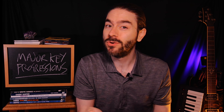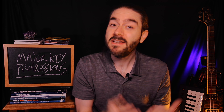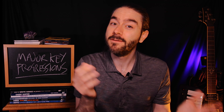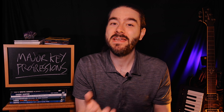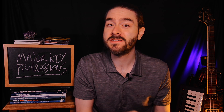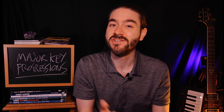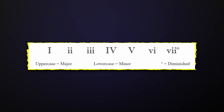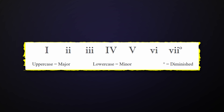You'll commonly see major key chords written out in roman numerals. These are used to show you the function of each chord in the key — that means how it works and how other chords interact with it to create different sounds for your progressions. The roman numerals are universal; they are not tied to any particular major key and can be applied to the key of your choice.